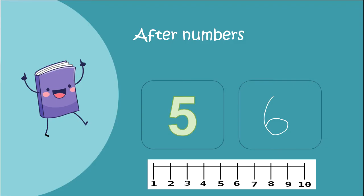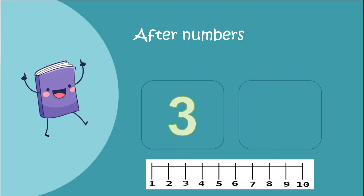I'm going to do another after number — 3. What number comes after 3? When we're counting: 1, 2, 3 — what number did you say after 3? 4! 1, 2, 3, 4 — 4 comes after 3. So that's the number 4, and we can write 4 like this.